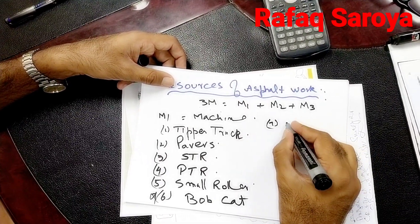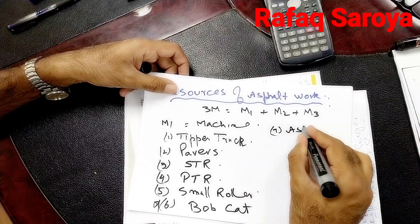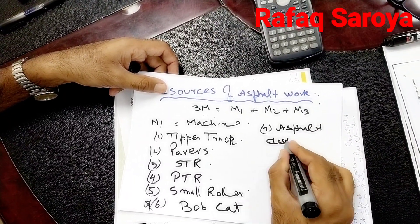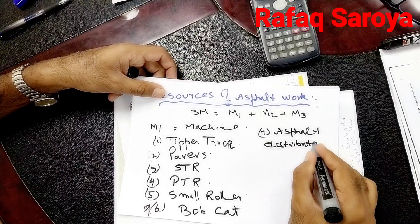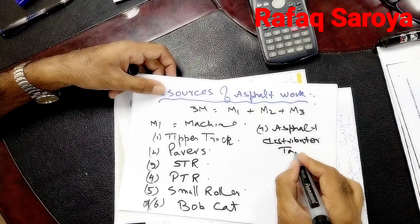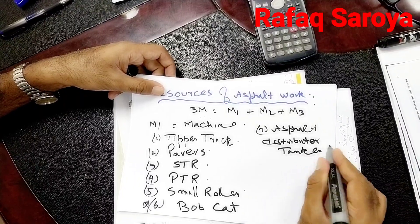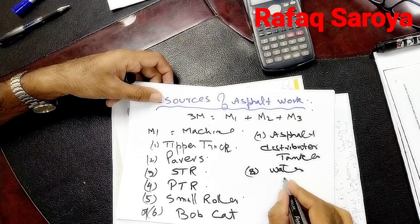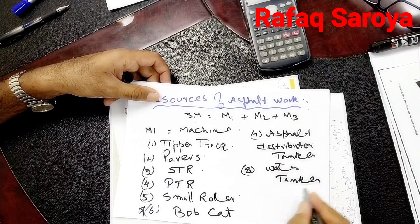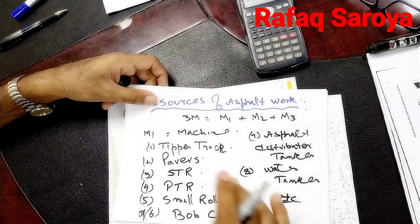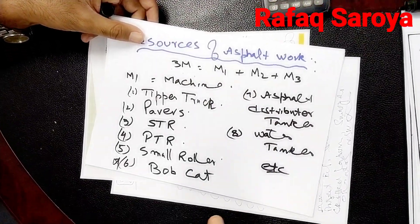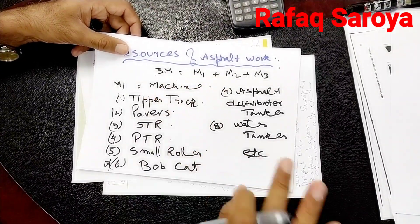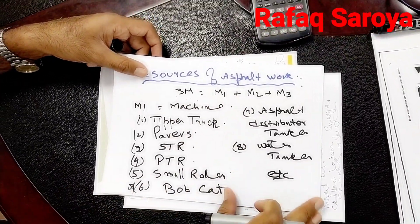Similarly, we need the asphalt distributor tanker and the water tanker, et cetera. How many are required depends upon the work nature. I just want to give you which type of machines are required.